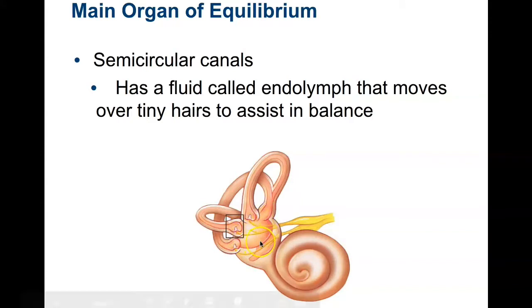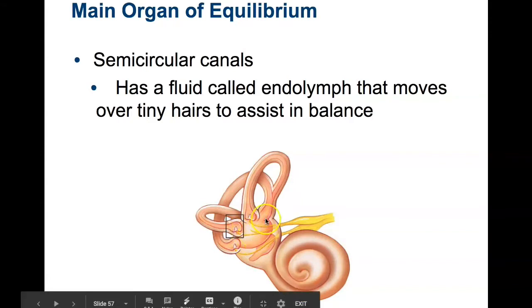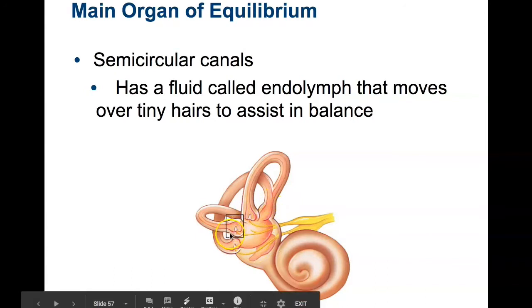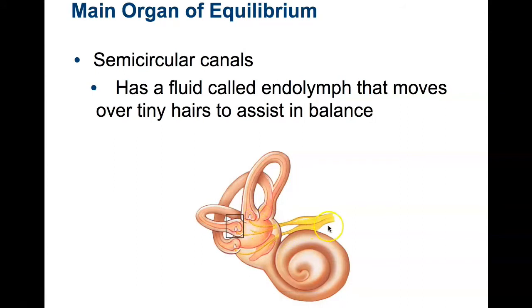Just like the demonstration, as we move up and down that endolymph fluid sloshes around inside our ears. As it moves it triggers nerves, which send signals up to the brain to be processed — whether we're looking up, looking down, or spinning around.